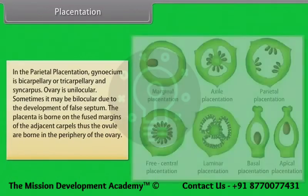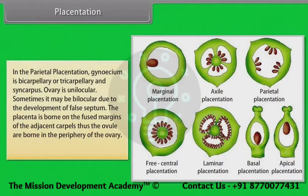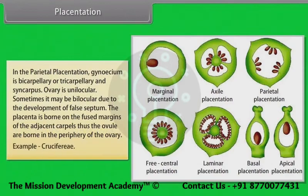In parietal placentation, the gynoecium is bicarpellary or tricarpellary and syncarpous. The ovary is unilocular but may become bilocular due to development of a false septum. The placenta is borne on the fused margins of adjacent carpels, and the ovules are borne in the periphery of the ovary. Example: Cruciferae.